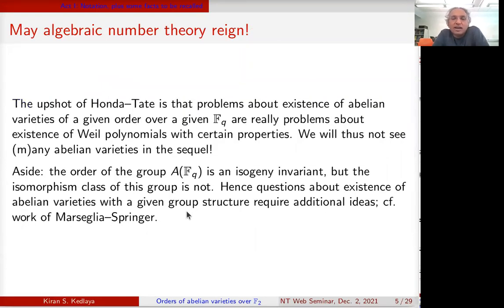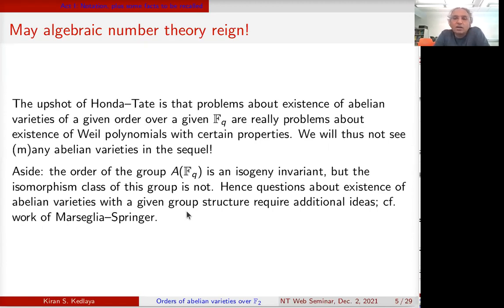We're going to be talking about isogeny classes rather than isomorphism classes, because these correspond exactly to Weil polynomials. The order of an abelian variety is invariant under isogeny because it only depends on the Weil polynomial. So it's natural when talking about orders to just work up to isogeny. The upshot of Honda-Tate is that problems about existence of abelian varieties of a given order over a given F_q are really problems about existence of Weil polynomials with certain properties.